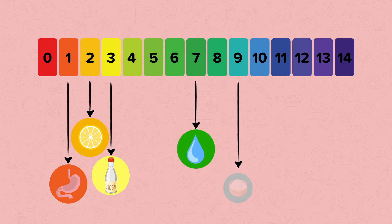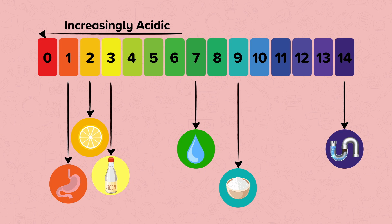Baking soda is alkaline and has a pH of 9, and drain cleaner is strongly alkaline and has a pH of 14. Acidic solutions become increasingly acidic the closer they are to pH 0. Alkaline solutions become increasingly alkaline the closer they are to pH 14.